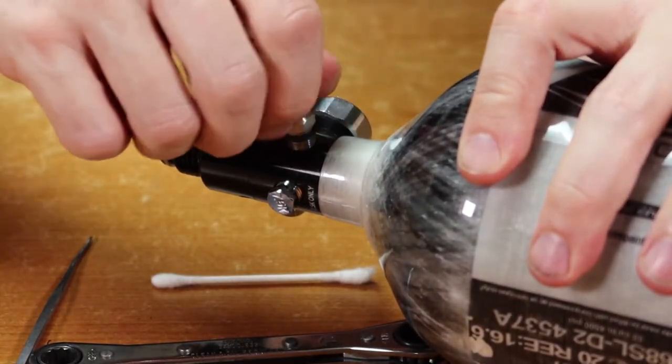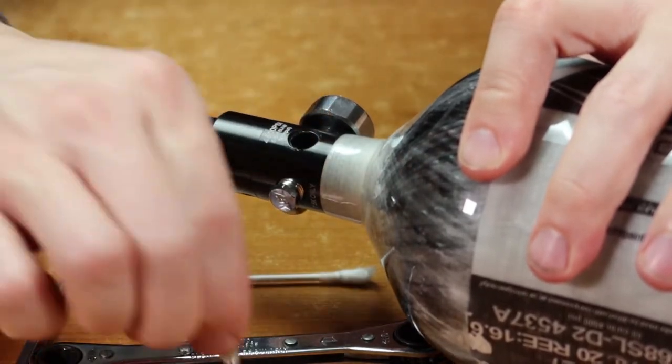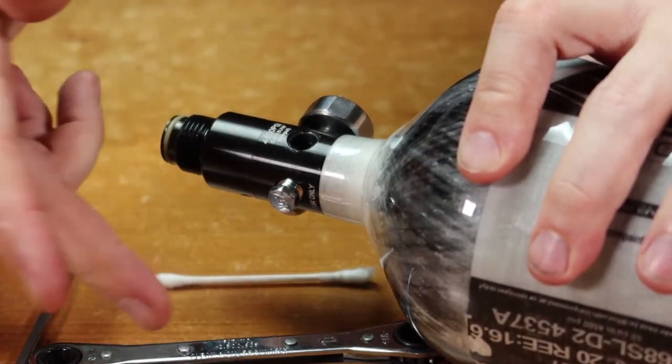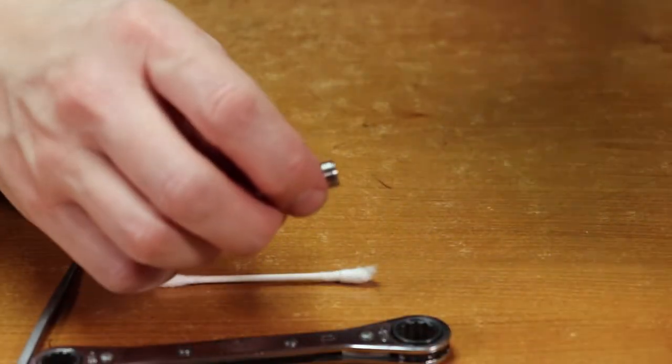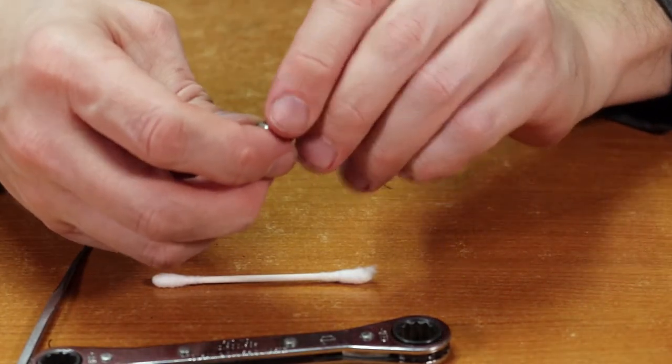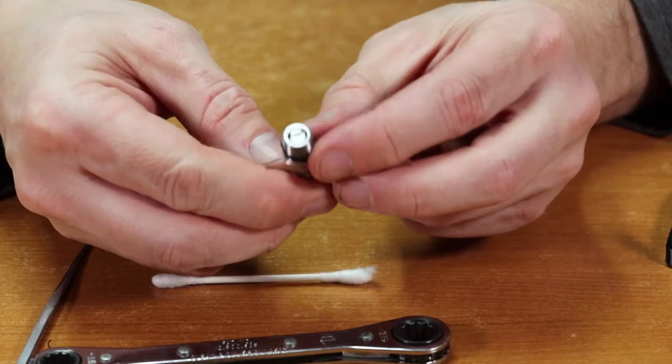We'll take the fill nipple out like so. The check valve may stay on the inside, but chances are if the O-ring's jammed it won't. What you'll probably have is a fill nipple that looks like this when you take it out.